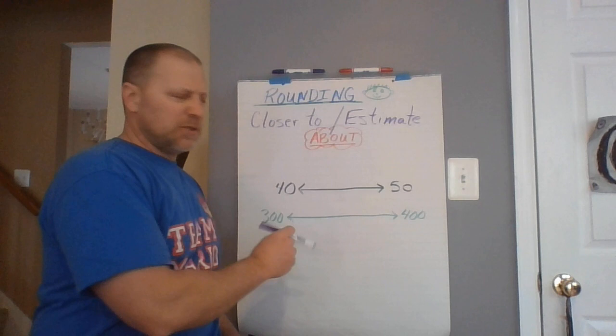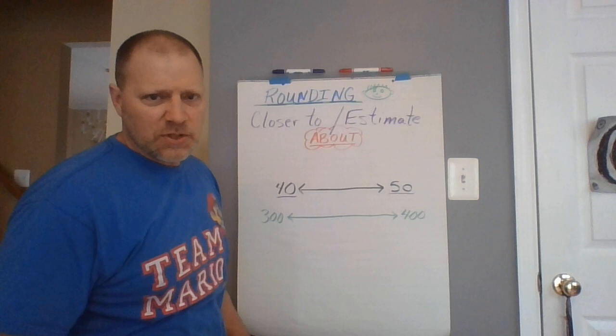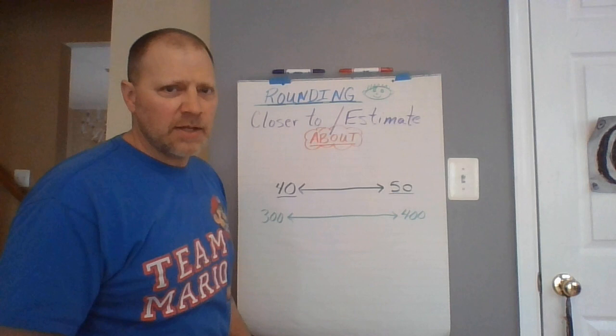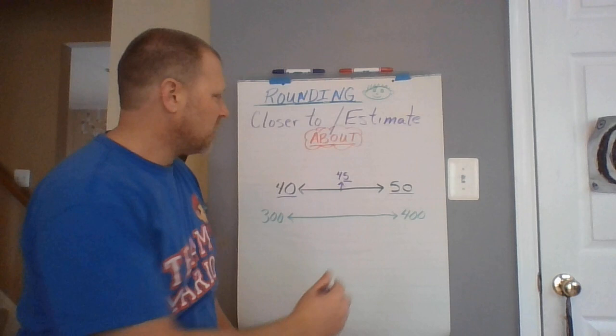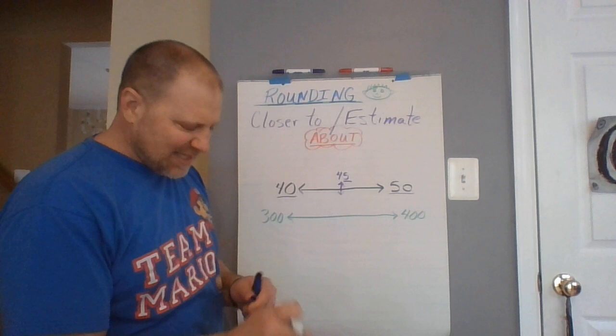I have two numbers here. I have a 10 of 40 and a 10 of 50. My question to you is, what number is right in between those two? And your answer is, Eric? Yes, Eric. It is 45. And I want you to remember this number 5 because it's really, really important. So 45 is directly between 40 and 50.